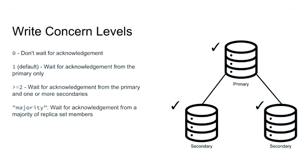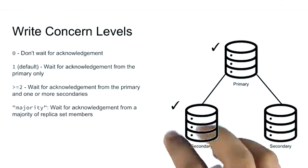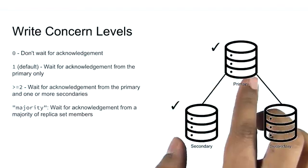Majority is a keyword that translates to a majority of replica set members. It's a simple majority, so divide the number of members by two and round up. So this three member replica set has a majority of two. A five member replica set would have a majority of three.